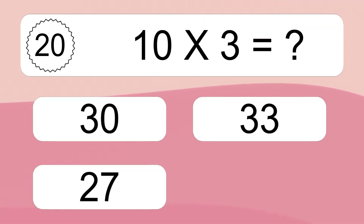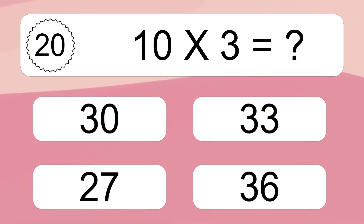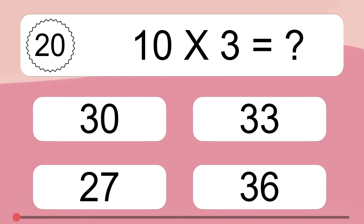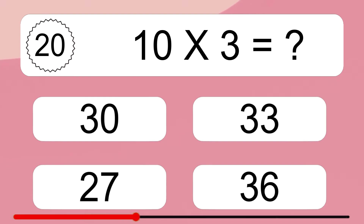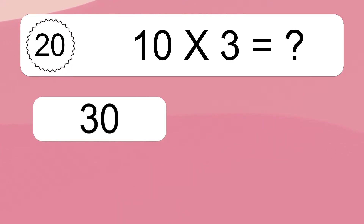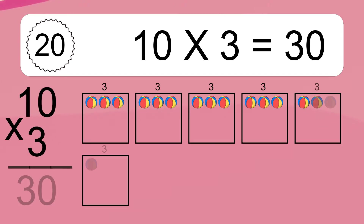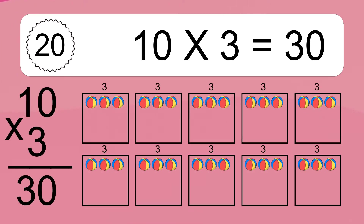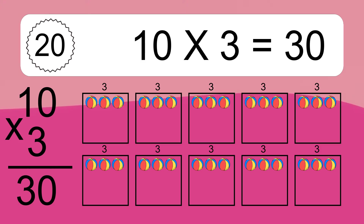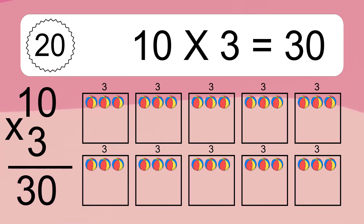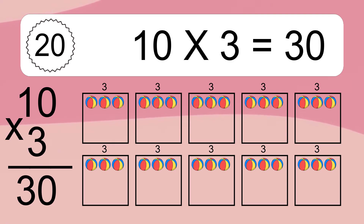10 times 3 equals what? 10 times 3 equals 30. We have 10 boxes and each box has 3 colorful balls inside. If you count all the balls in all the boxes together, you will have 10 times 3 balls. This equals 30 balls.